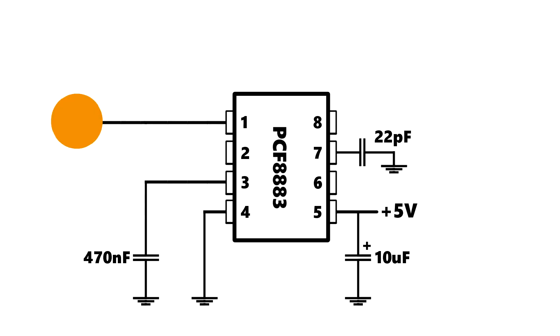Pin 2 is important. It defines whether the chip acts as a button or as a switch. Let's connect it to ground for now.